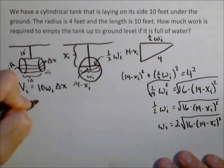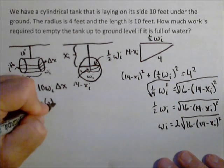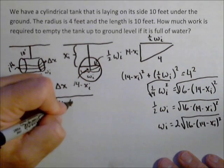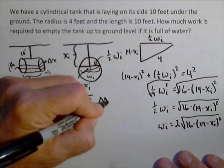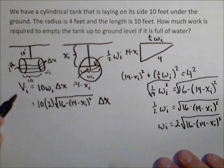So now I have V sub i is equal to 10 times 2 times the square root of 16 minus (14 minus x sub i) squared, delta x.